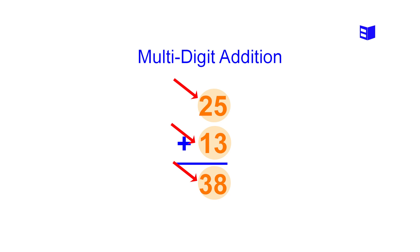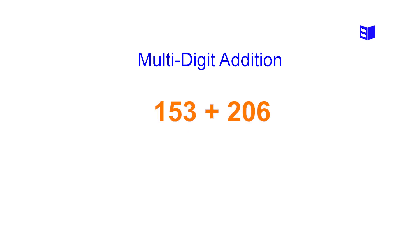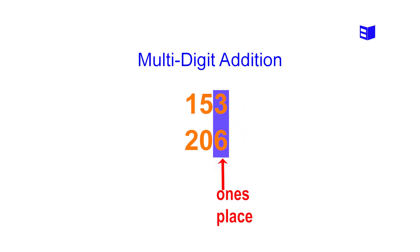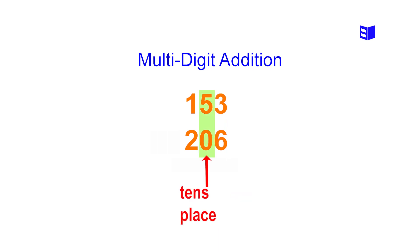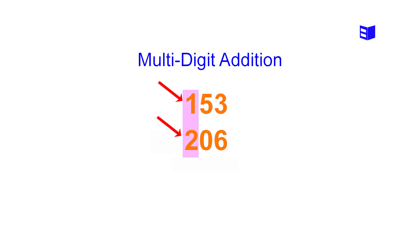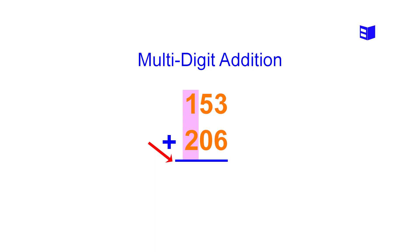Let's take another example: 153 plus 206. First, write the numbers on top of each other — the ones in the same column, the tens in the same column, and the hundreds in the same column. In this example, the numbers 3 and 6 are in the ones column, the numbers 5 and 0 are in the tens column, and the numbers 1 and 2 are in the hundreds column. Next we place a plus sign to the left of 206, and we draw a line below the numbers.